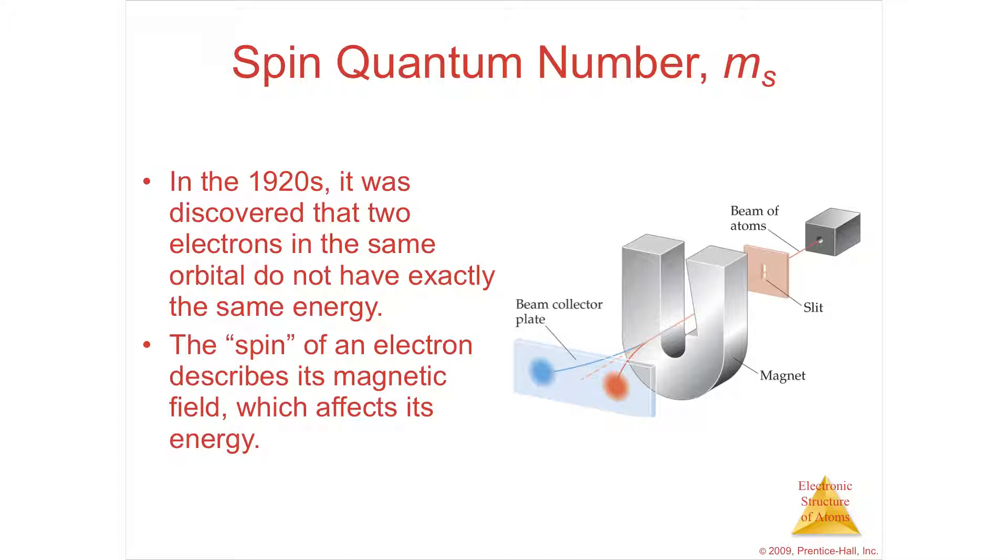So they had to add a fourth quantum number. The first one, n equals 1, 2, 3, those are the levels on the periodic table. The second one denoted a subshell, s, p, d, and f. The third one told you what orientation each was in. The s had one orbital, the p had three, the d had five, the f had seven.